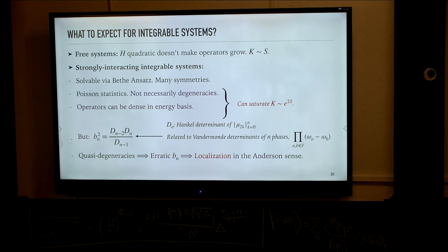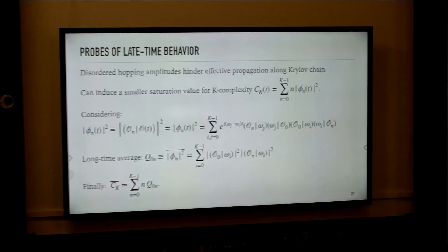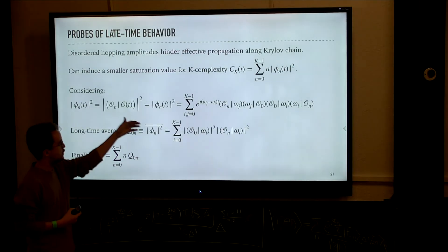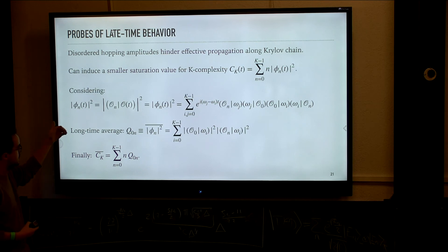So the Krylov chain can be maximal, but the propagation of the wave packet is slowed down by the disorder of the Lanczos coefficients. To probe this, we wish to compute K-complexity as a function of time, and we observe that it actually doesn't grow all the way to the maximum value that it would obtain if the Liouvillian generating time evolution were that of a chaotic system. We can also predict this from spectral quantities by considering the expression of the long-time average.